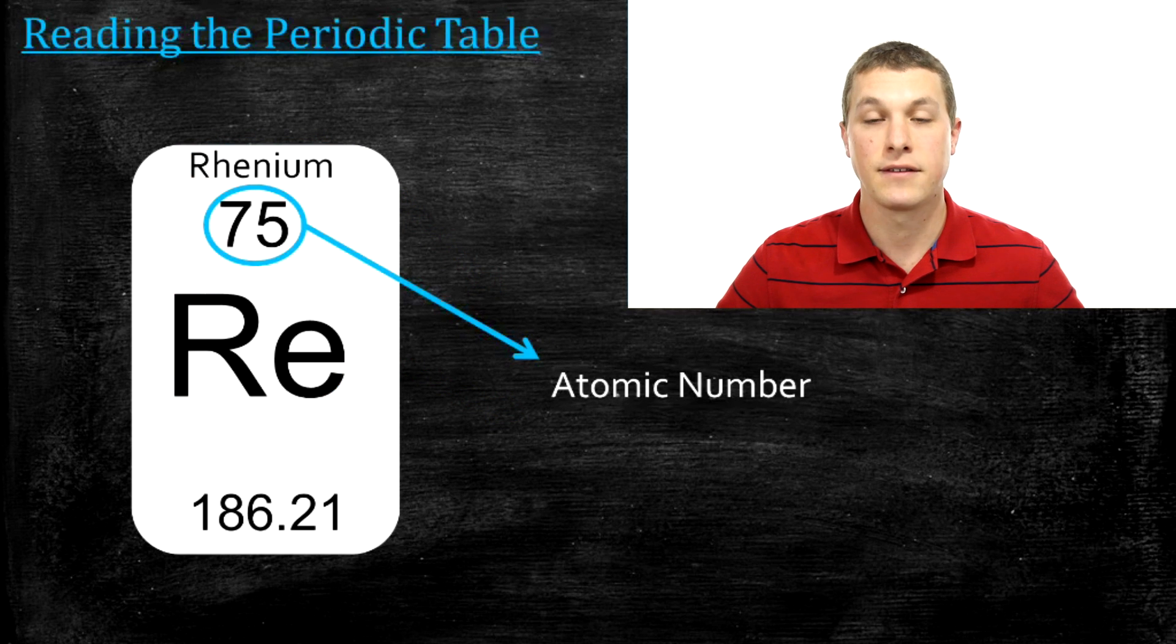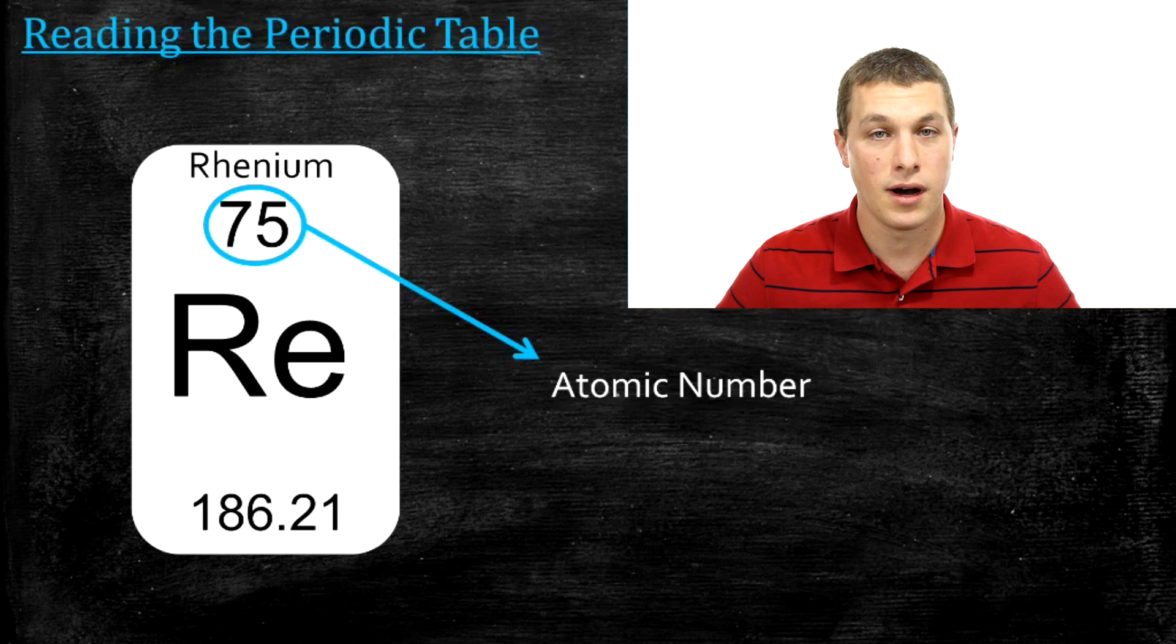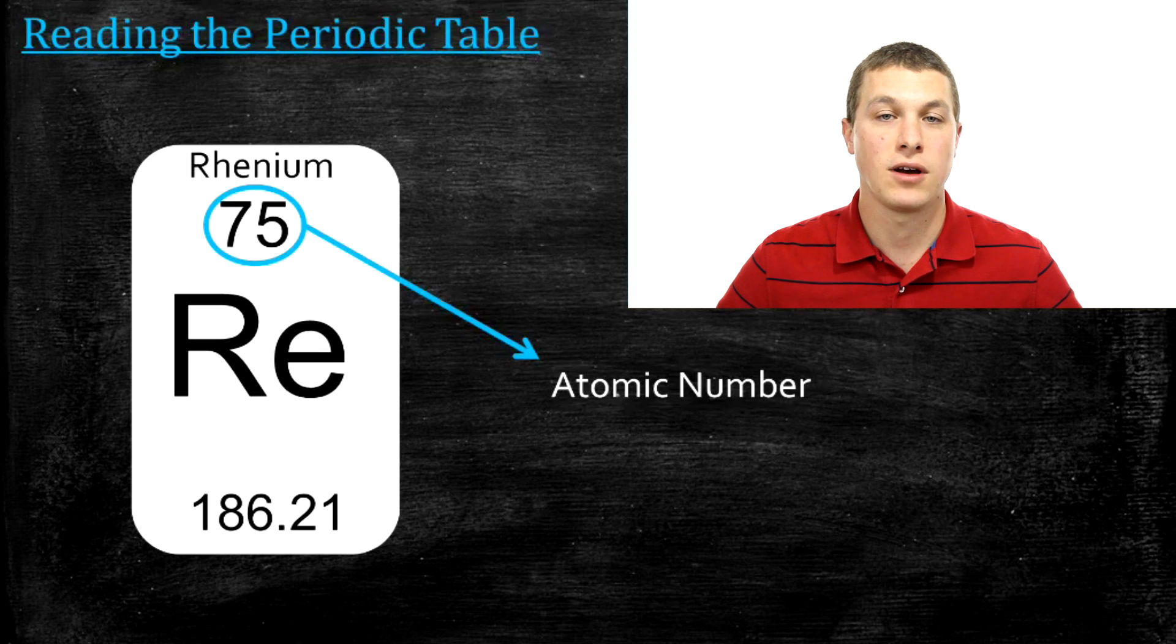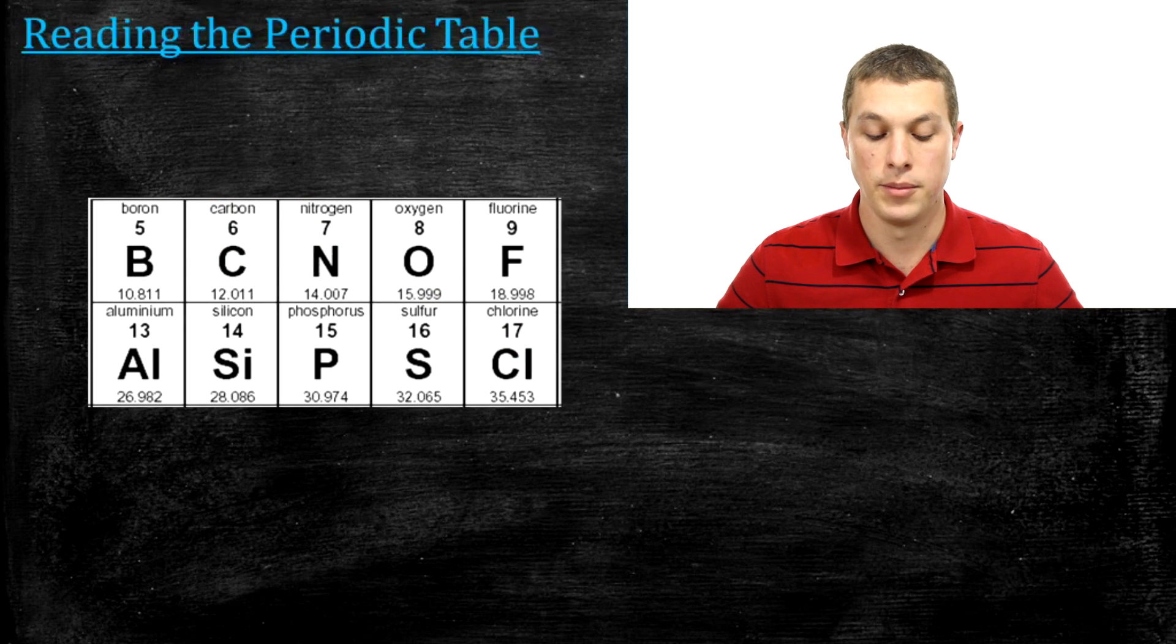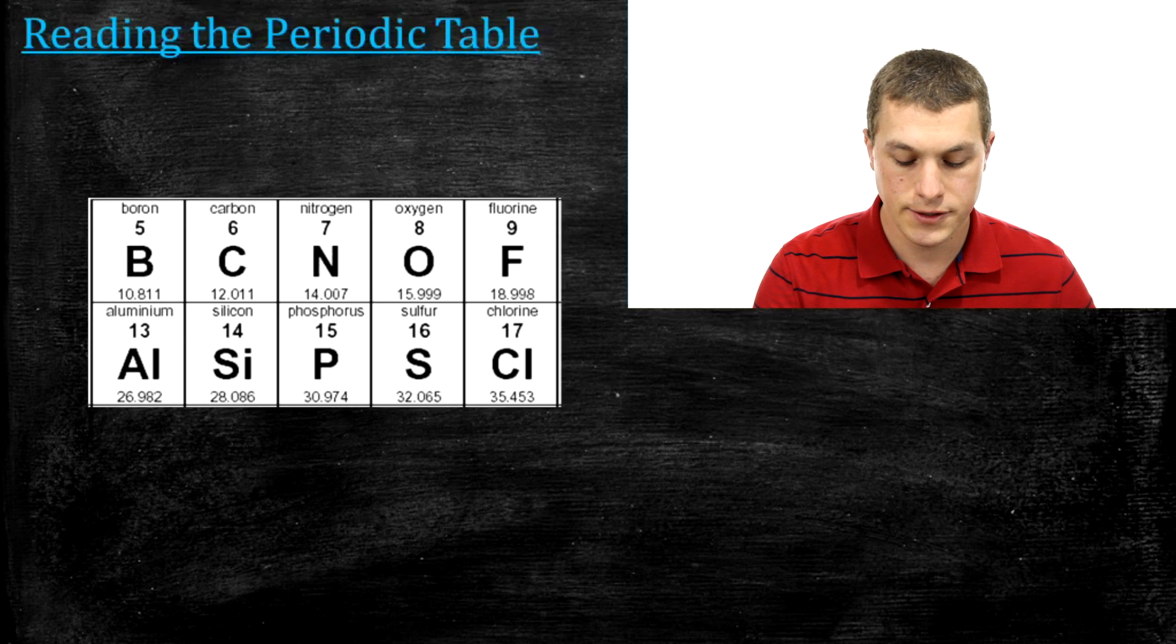This next guy is called the atomic number, and the atomic number tells you how many protons are in that element. It's also the way the periodic table is organized. So if you look at this group of elements on the periodic table, you'll notice that they're organized from left to right counting up by atomic numbers.